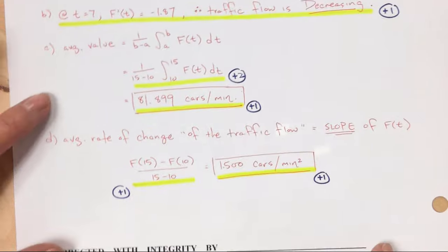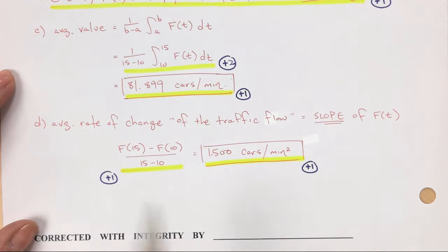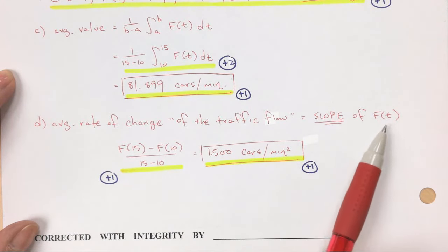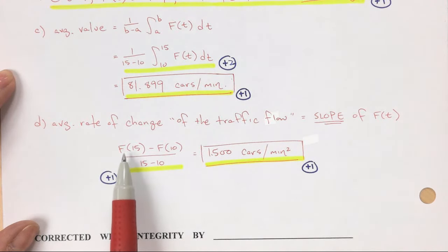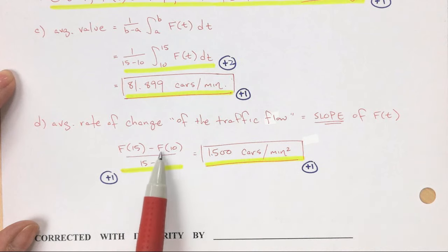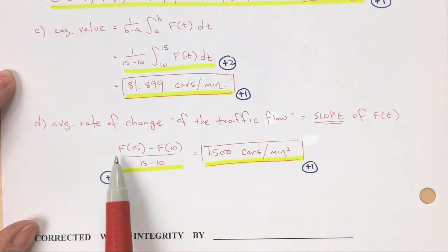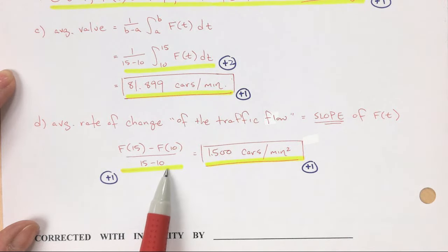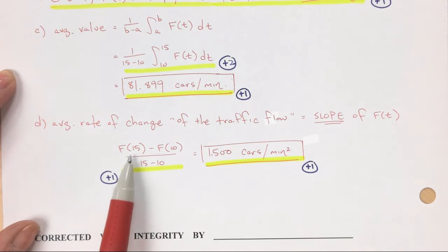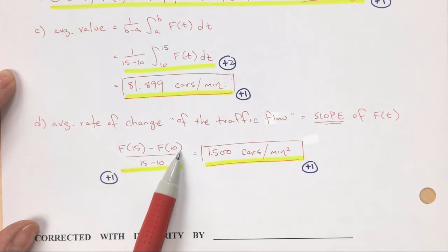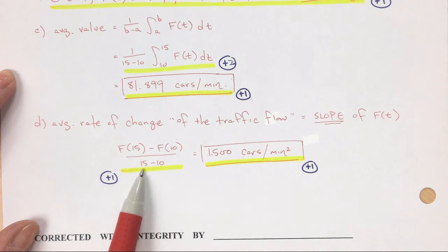How do you find slope? I wrote average rate of change of the traffic flow would be slope of F of T. Slope is literally F of B minus F of A all over B minus A. So that's what I did. F of 15 minus F of 10 all over 15 minus 10. I plugged those into the calculator. I have to actually plug 15 into F of T, and then I have to subtract and plug 10 into F of T and divide by 5.